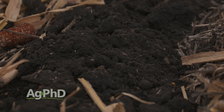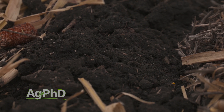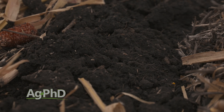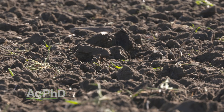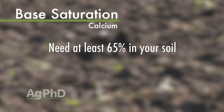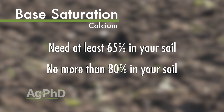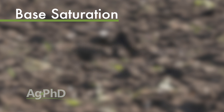The first nutrient to start with is calcium, because that's the one you want the most of in your soil. It's a very important nutrient — and you might be thinking we haven't talked about N, P, and K, but we're going to start with calcium. We need to have at least 65% calcium in your soil and no more than 80%. If we've got that to start with, the other nutrients all start to fall in place.